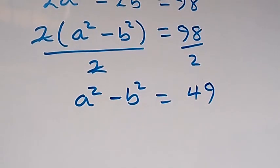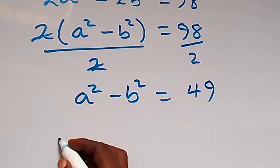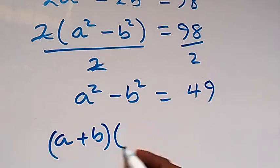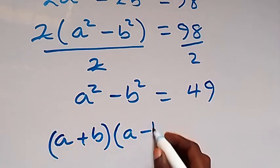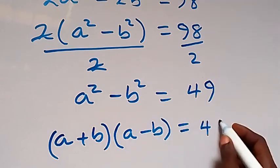Then here we have difference of two squares which we can write as a plus b then into bracket a minus b then equals to 49 on this side.